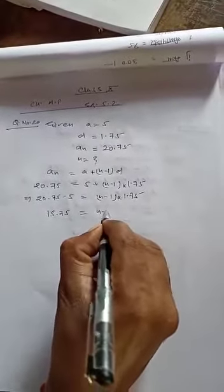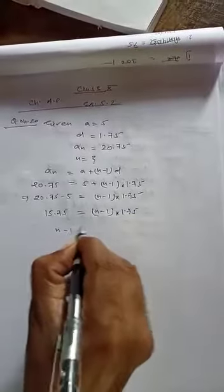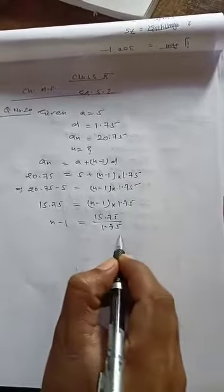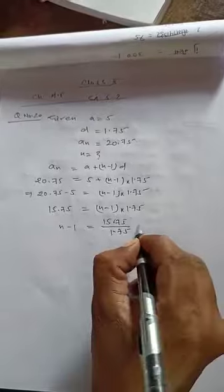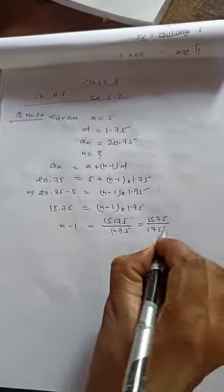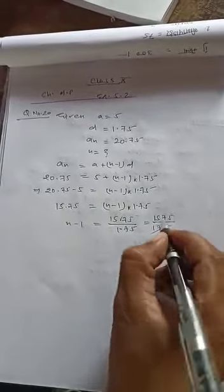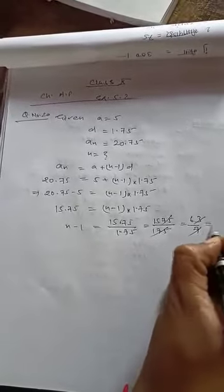So n-1 = 15.75 ÷ 1.75. To solve this, we remove the decimals: 1575 ÷ 175. We can simplify: 63 ÷ 7 = 9.